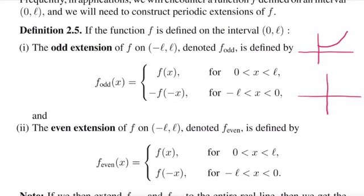So the odd extension, I have the original function first. But now I extend it in the negative with a minus sign. So I take the whole function, I mirror image it to the negative. And so this would be the odd extension.